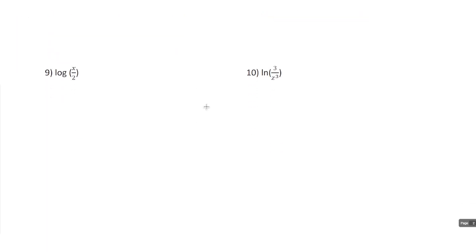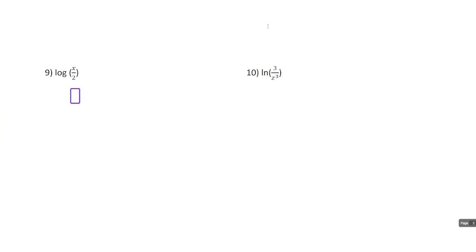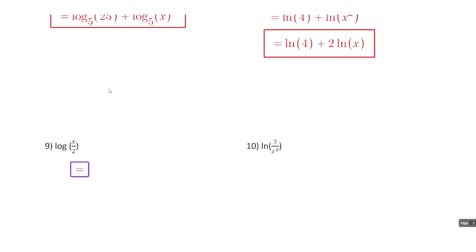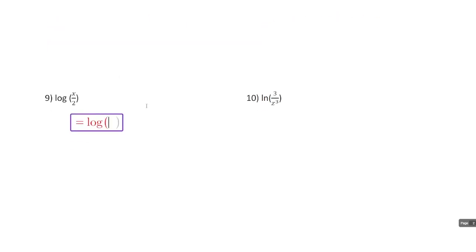Number 9 has a quotient, so we've got division here and we want to use the quotient property. We can split it up just like with the product property, with the only real difference being that we subtract instead of add. So this is just going to equal log of x minus log of 2.